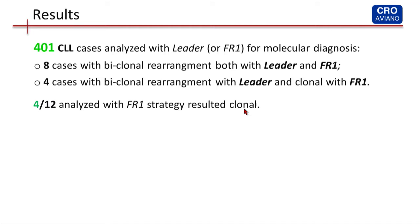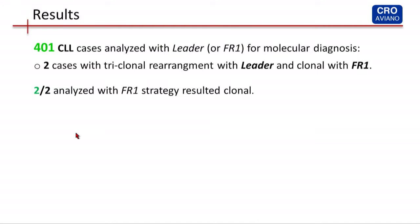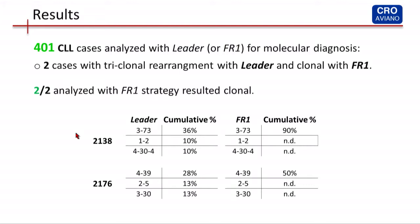In our cohort, we have 12 biclonal rearrangements total. We sequenced all these cases both with the leader and FR1 to confirm our results. For eight of them, we found the same two IGHV genes both with the leader and with the FR1, with the same percent of over-representation. For four of them, we found two different IGHV genes, but only one was over-represented in the context of the FR1 PCR. The same happened in the triclonal cases — three different clones with the leader, but only one was over-represented, with no indication that the other two were present in the Lymphotrack analysis.